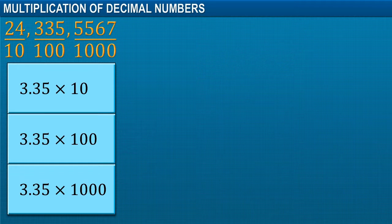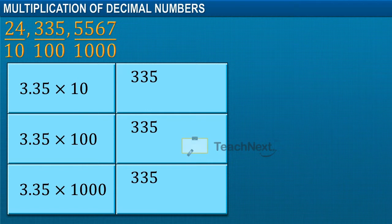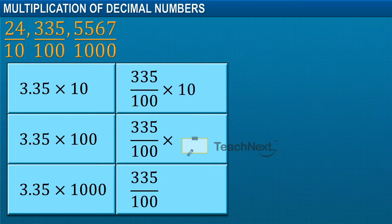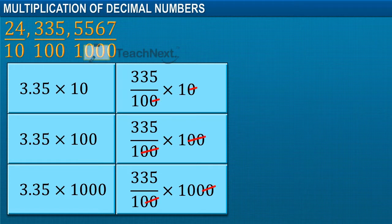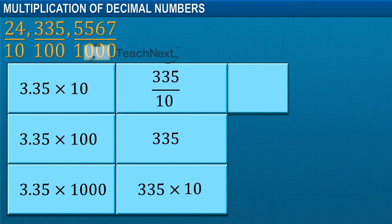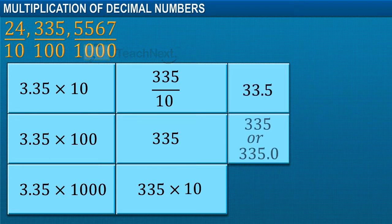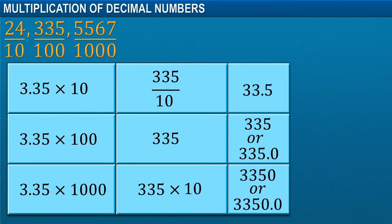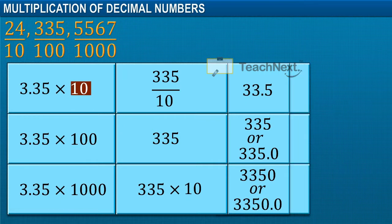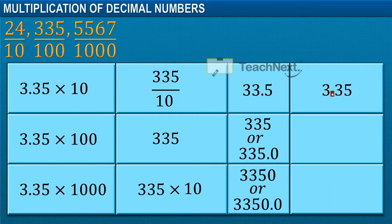Decimal numbers can also be expressed as fractions. We can remove the decimal and convert the numbers into fractions. Now, let's see how you would multiply a decimal number with 10, 100, or 1000. For example, 3.35 can also be written as 335 upon 100. We multiply the fraction with 10, 100, and 1000 respectively. We simplify and insert the decimal point by counting the decimal places in the original number.